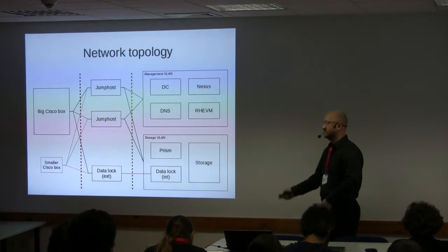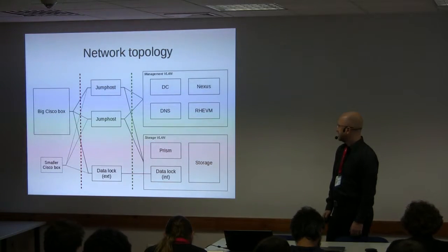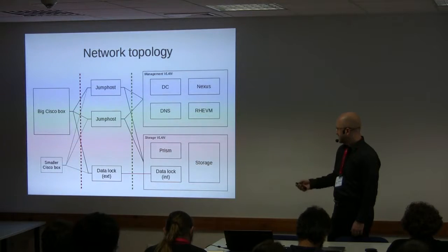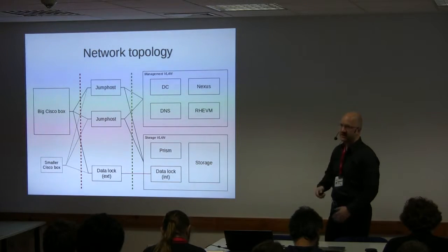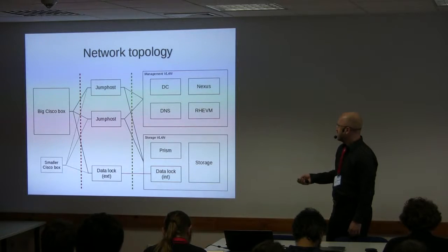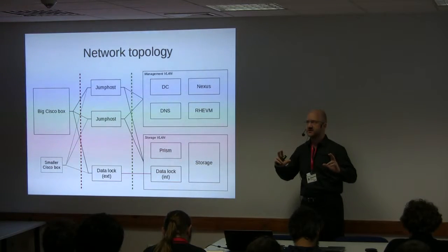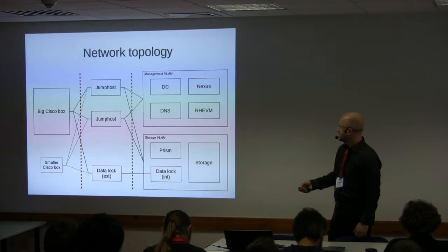The storage is a large physical black box located in a different room from the main servers. There is 10-gigabit fiber between the Blade Center — which has a built-in switch with a 40-gigabit backplane — and the storage facility, with 10-gig connections going to the jump hosts and to the data lock.